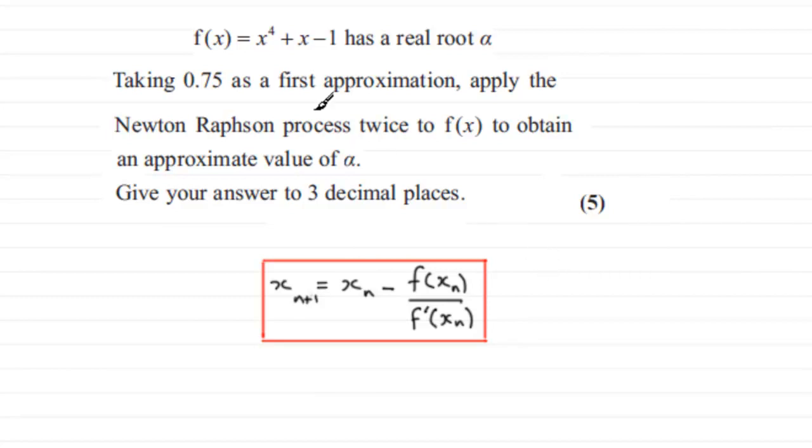So to start this then, let's just copy down what f of x is. So we've got, first of all, f of x equals x to the power 4 plus x minus 1.